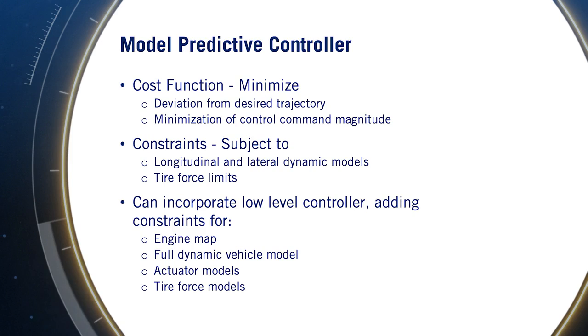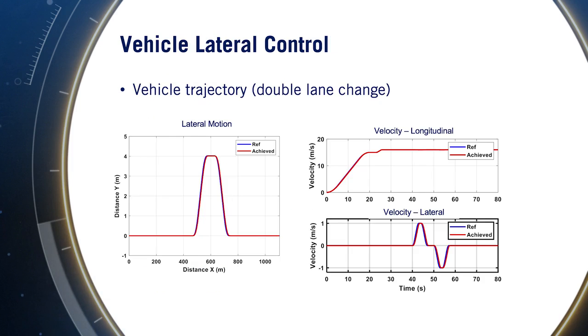These costs and constraints define the optimization used in our example, which then gets converted into actual vehicle commands by the low-level controller. It is also possible to incorporate the low-level control into the MPC optimization, which would involve including as constraints the engine map, full vehicle dynamic models, actuator forces, and tire force models. The result is a large optimization problem that may be challenging to solve in real time, but let's have a look at the results.